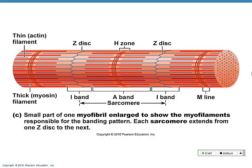The protein in the M line is called myomesium — that's why they call it M. Know what an A band is, what an I band is, what a Z disk is, what an M line is, what an H zone is, and understand what a sarcomere is.